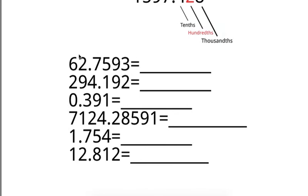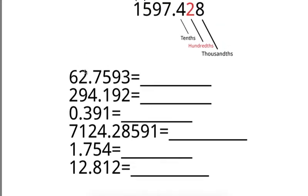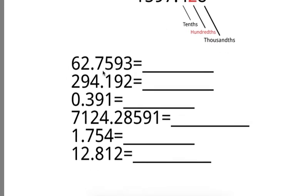So how do you round to the hundredths place? First, you want to find what number is two digits to the right of that decimal point. For example, this one is 5. Next, you want to look at the number next to that number, that 5, which is 9.